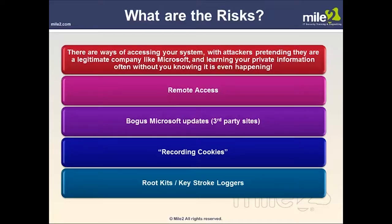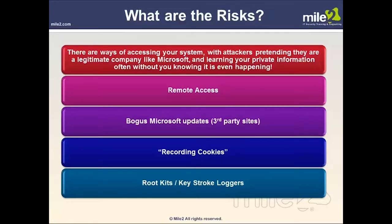Attacks can come through bogus Microsoft updates — instead of going through the real Microsoft update site, you're directed to a third-party site. They can also record cookies, which are text files stored in your temporary cache that contain information about you, like your name for website logins. We also have rootkits and keystroke loggers, which are very hard to find and can cause a lot of damage — slowing down your machine, causing crashes, and consuming memory and processing power.